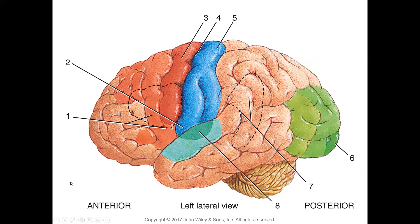Now let's identify the cerebral areas by function. Number four shows the central sulcus. Number three — the pre-central gyrus — is your primary motor area. The post-central gyrus shown in blue is your primary somatosensory area, which receives nerve impulses of touch, proprioception, pain, and temperature. All sensory neurons ultimately send information to this post-central gyrus area. Most motor impulses are initiated in the primary motor area of the pre-central gyrus.